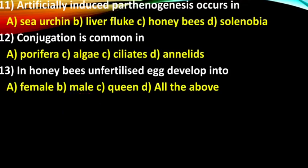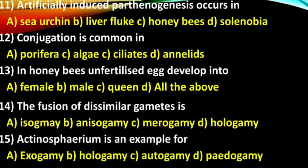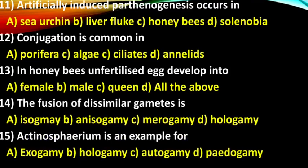Question 14: The fusion of dissimilar gametes is — options are isogamy, anisogamy, merogamy, hologamy. The right answer is anisogamy.